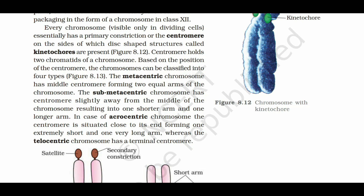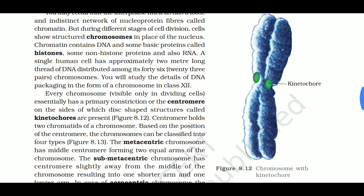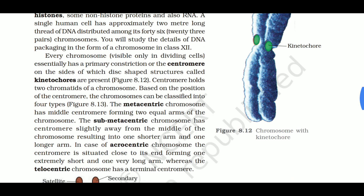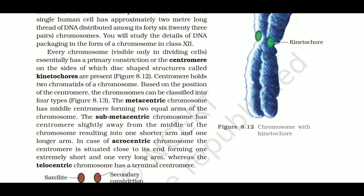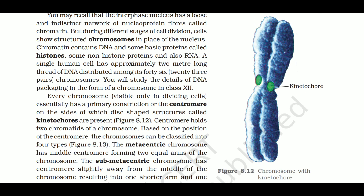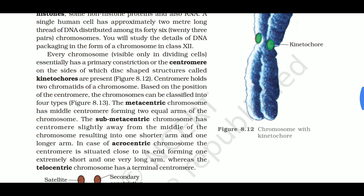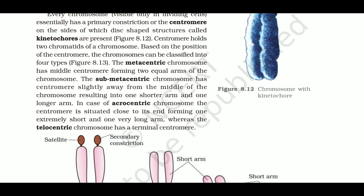Every chromosome, visible only during cell division, has a primary constriction called the centromere. On the sides of the centromere are disc-shaped structures called kinetochores, which are attachment points for spindle fibers during cell division. The centromere holds the two chromatids of a chromosome together.